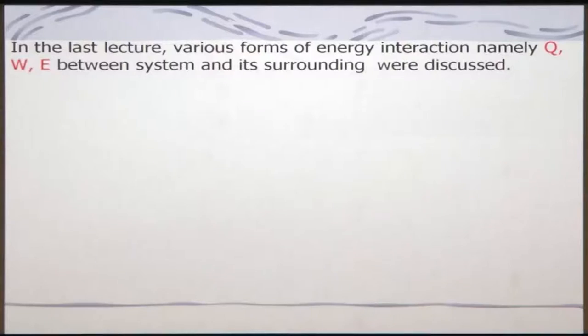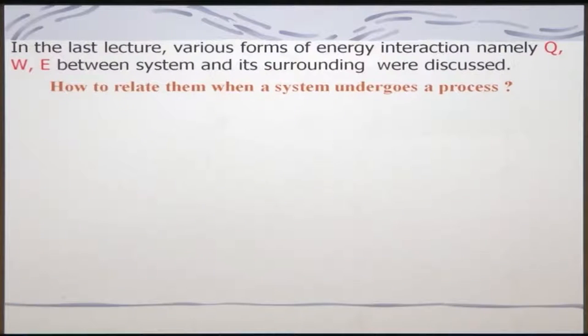But today we will be doing something a little different. As I mentioned at the very beginning, we will be looking at various relationships and various quantities — namely heat, work, and energy — through which a system interacts with its surroundings. We want to understand what the relations between these things are. Because whenever a system undergoes a process during its interaction with surroundings, there will be some change in energy, and that energy interaction can take place either by heat or by work.